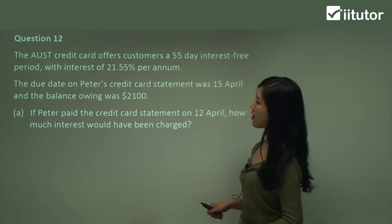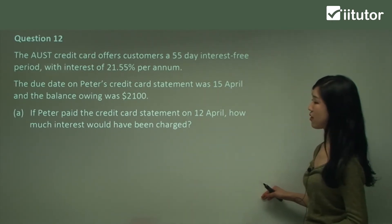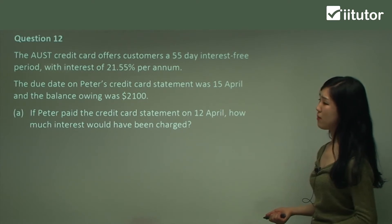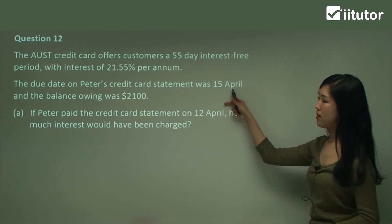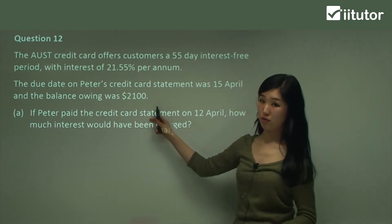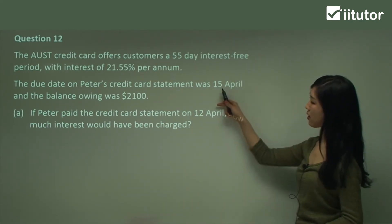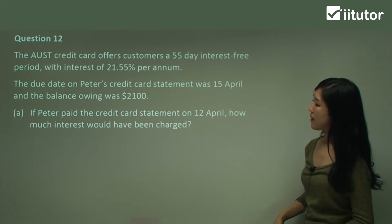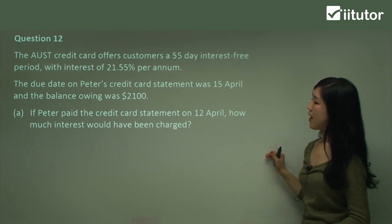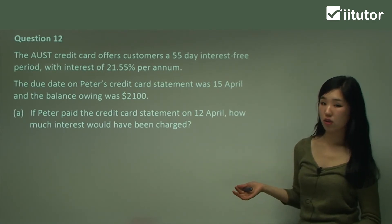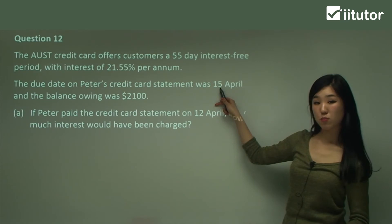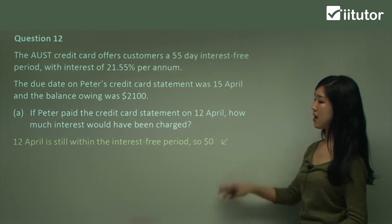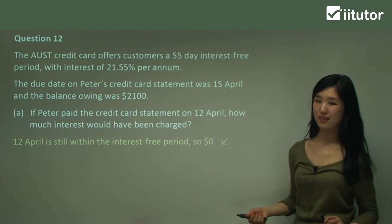Question 12 says: the Aust credit card offers customers a 55-day interest-free period with interest of 21.55% per annum. The due date on Peter's credit card statement was 15th of April and the balance owing was $2,100. So if he didn't pay by 15th of April, he has to be charged interest. Now, if Peter paid the credit card statement on 12th of April, how much interest would he have been charged? Well, 12th of April is before the due date, so it's still within the interest-free period — he has to pay $0 interest. He's not going to be charged anything, so he's quite safe.